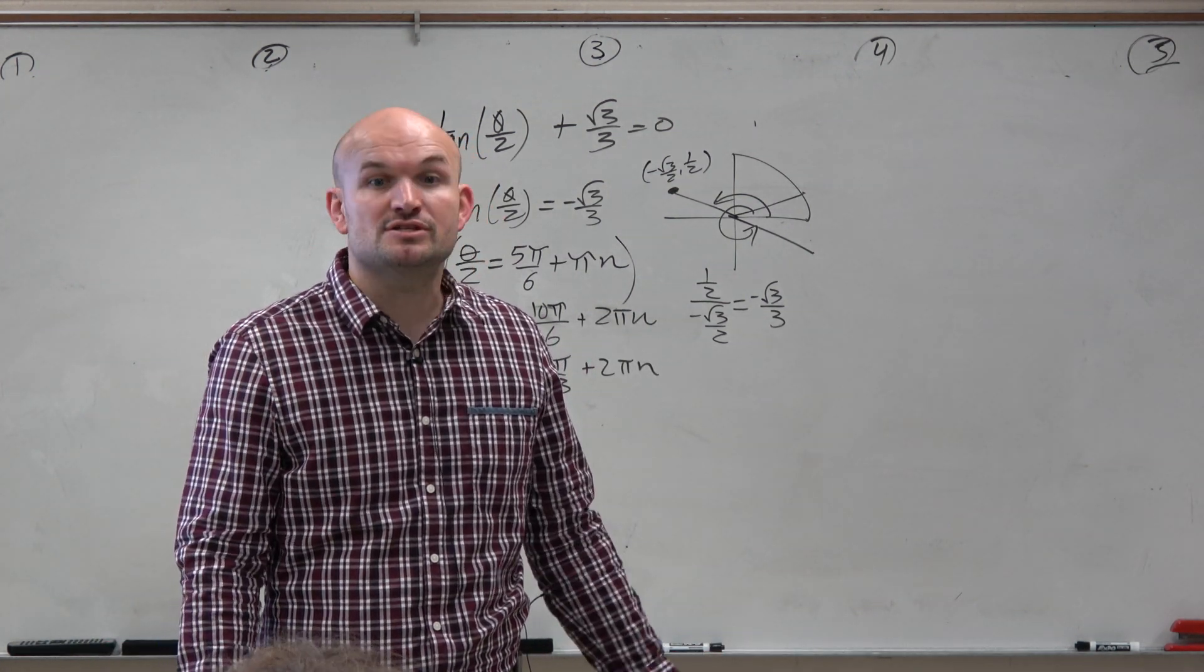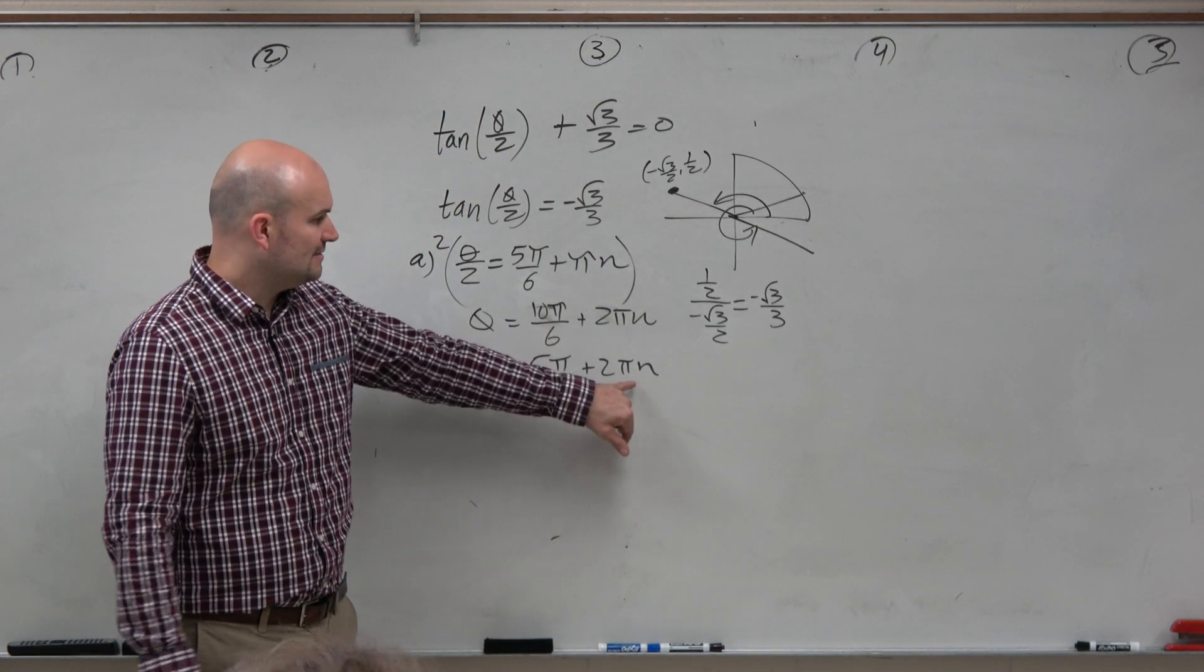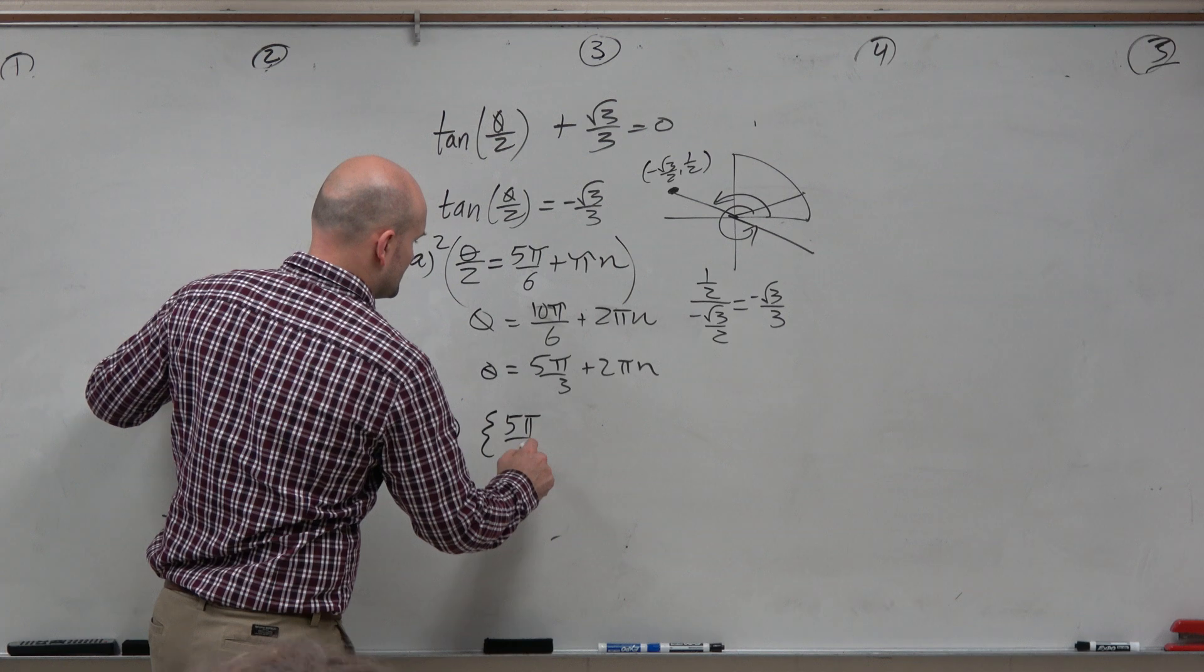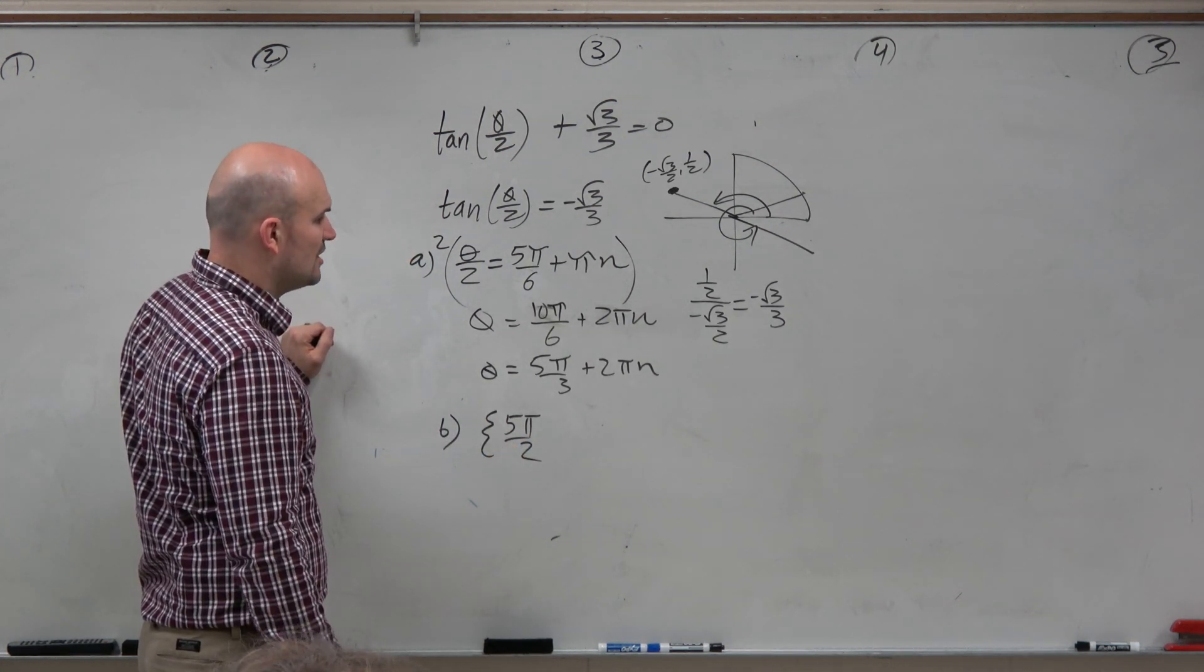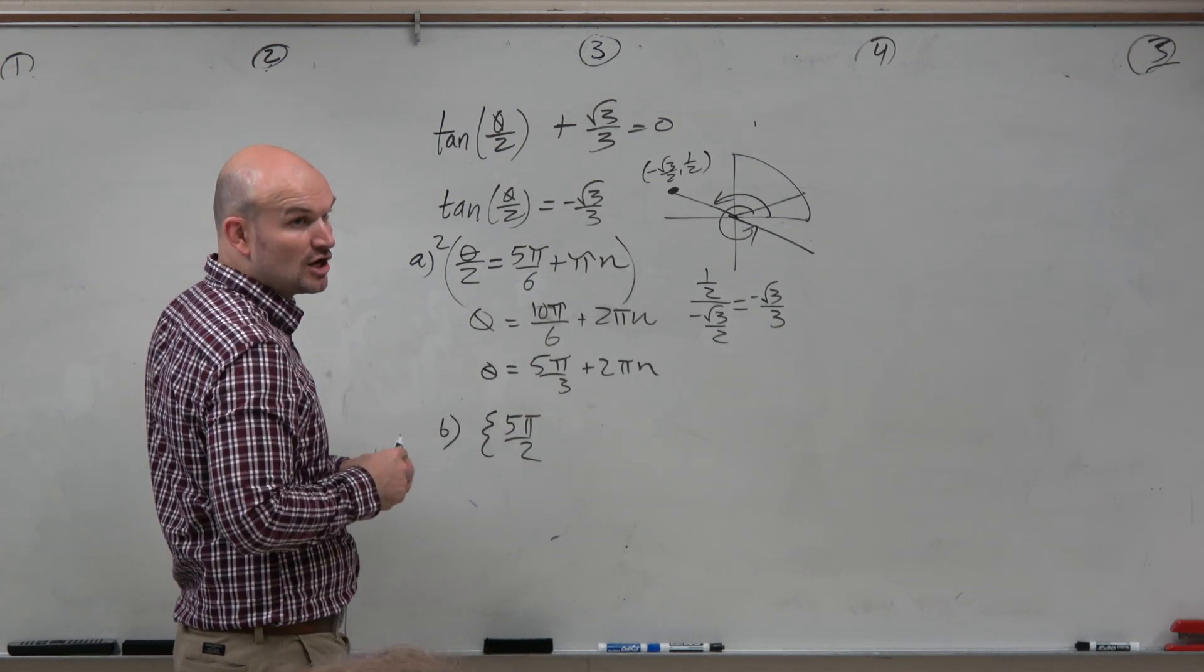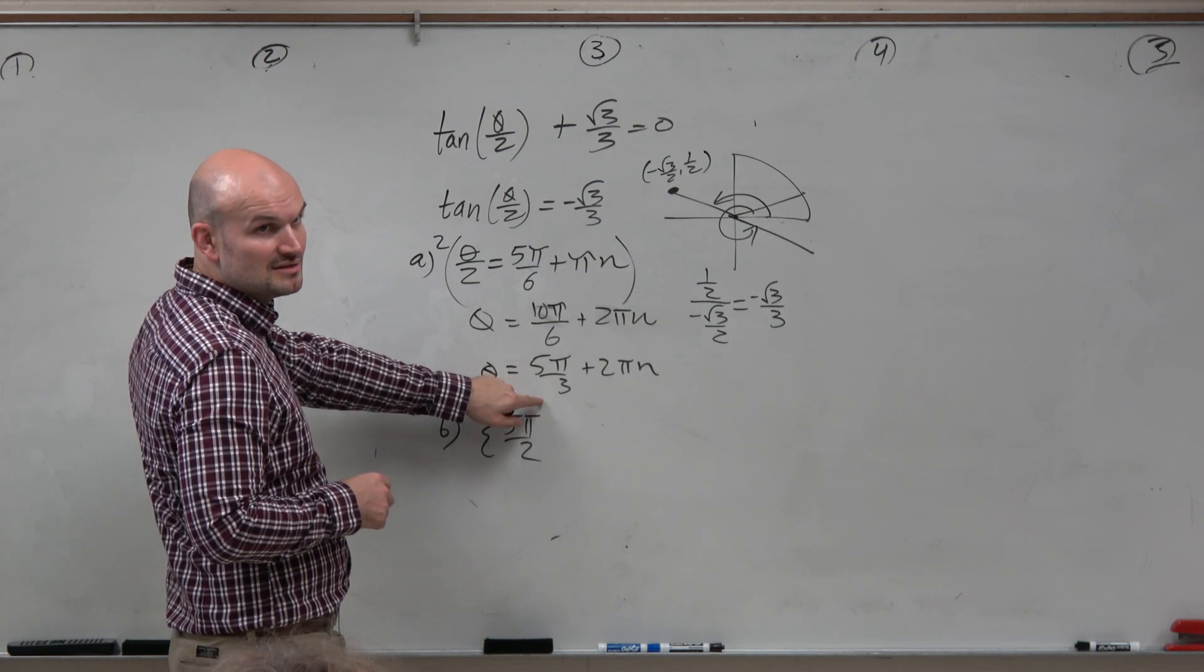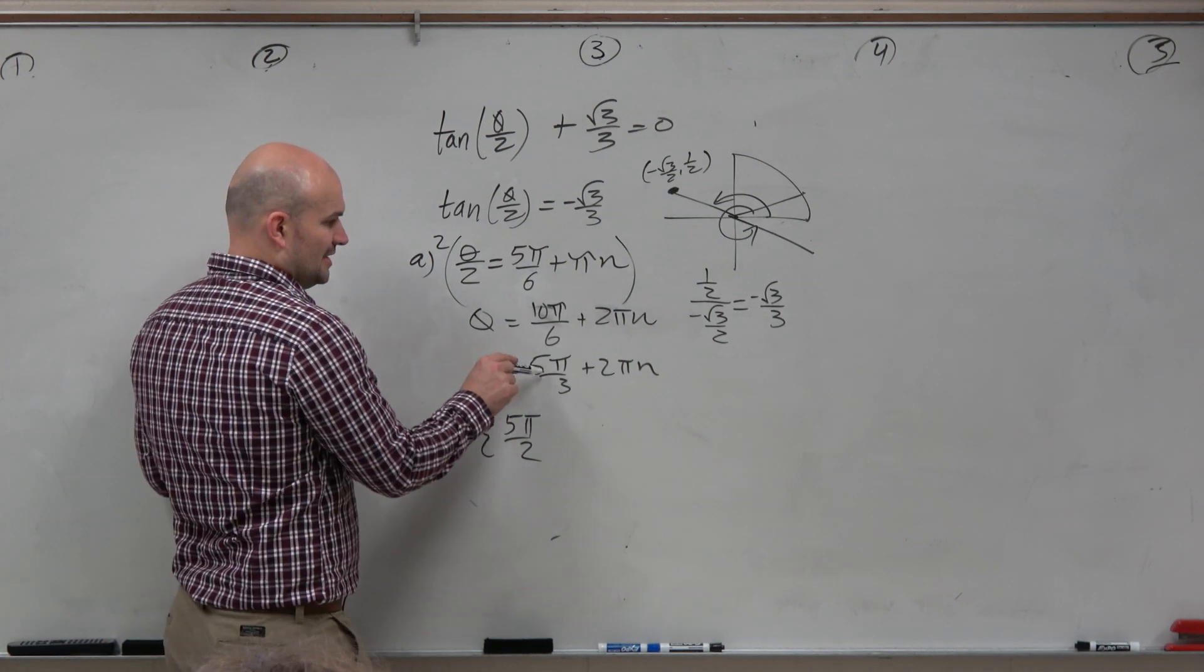Now again, the next one is find all the solutions between 0 and 2 pi. So again, between 0 and 2 pi, let's make n 0. So when n is 0, I'm just left with 5 pi over 3. What about when n is 1? That's 6 pi over 3, right? 6 pi over 3 plus 5 pi over 3 is 11 pi over 3. Is that larger than 2 pi? 2 pi is 6 pi over 3 in terms of thirds. Are you guys following, not following? OK.